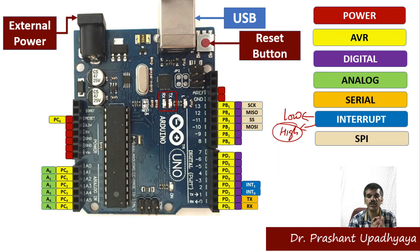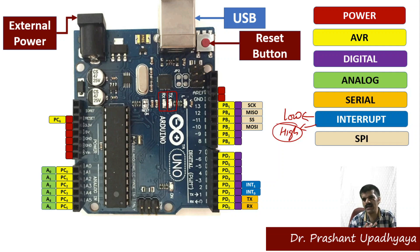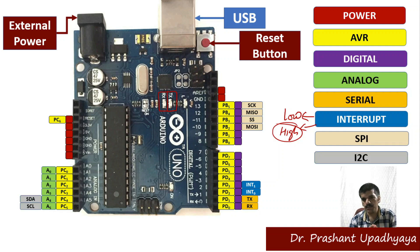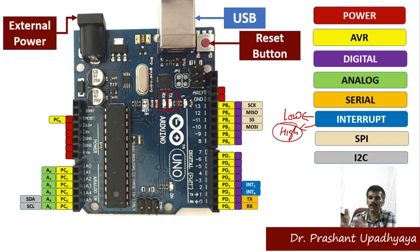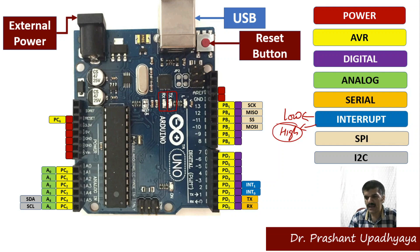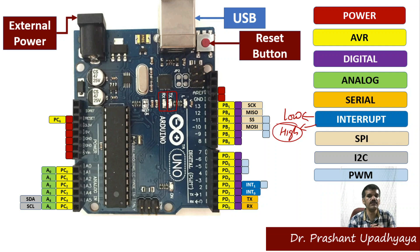Then we have the Serial Peripheral Interface (SPI), a synchronous serial communication interface used for short-distance communication. Its pins include SCK, MISO, SS, and MOSI. We also have I2C pins, which are used as a serial communication protocol that transfers data bit by bit along a single wire.